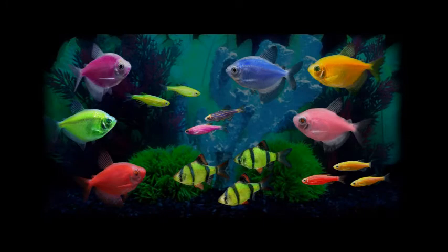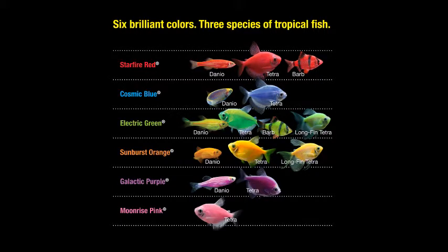Many people also buy transgenic organisms as pets, the most popular of which is GloFish. GloFish are fish of various species, including zebrafish, tetras, and tiger barbs, that have been given a gene for fluorescence that comes from either jellyfish, corals, or sea anemones.